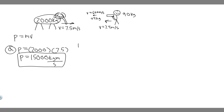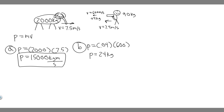Now let's move on to B. For B, we're trying to find the momentum of the dart. Same formula: P equals the mass of the dart, which is 0.04 kg, times its velocity of 600 meters per second. So it's 0.04 times 600 — plug that in and you get 24. So the momentum of the dart is 24 kilogram meters per second.